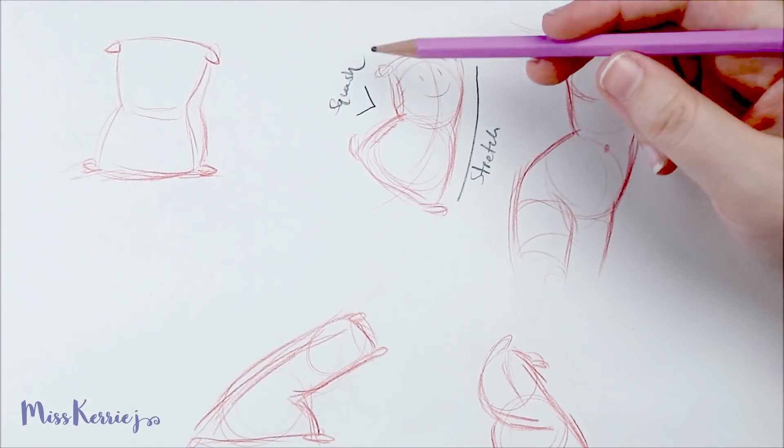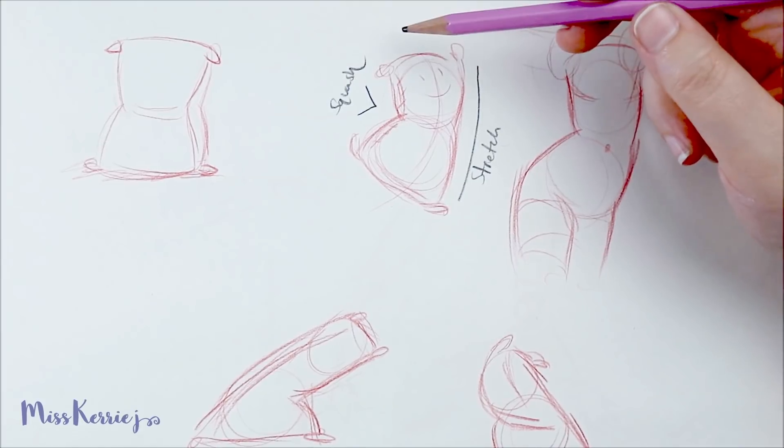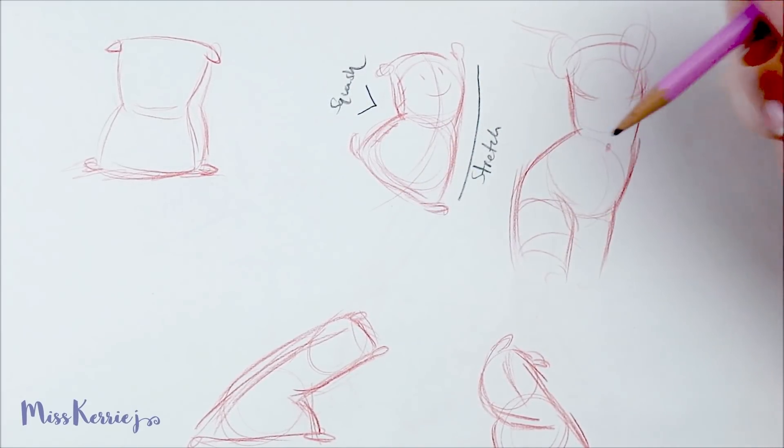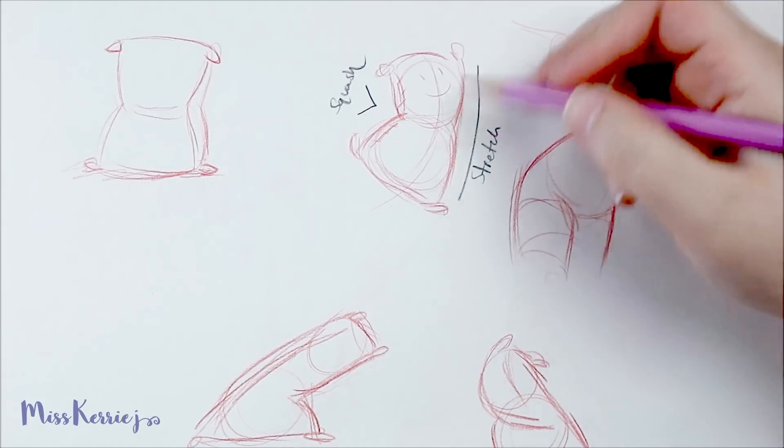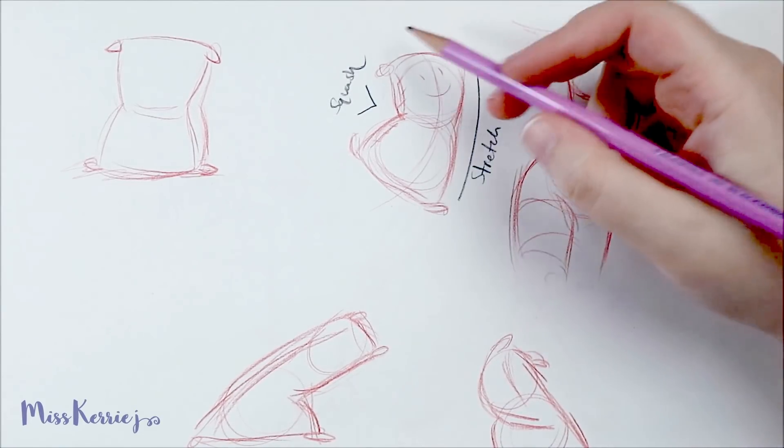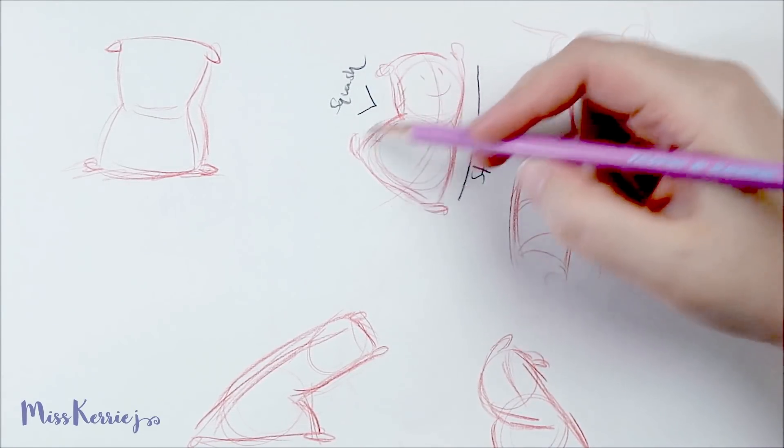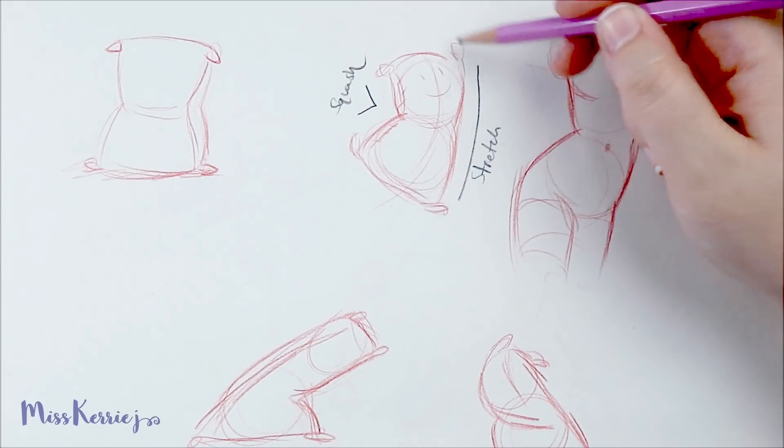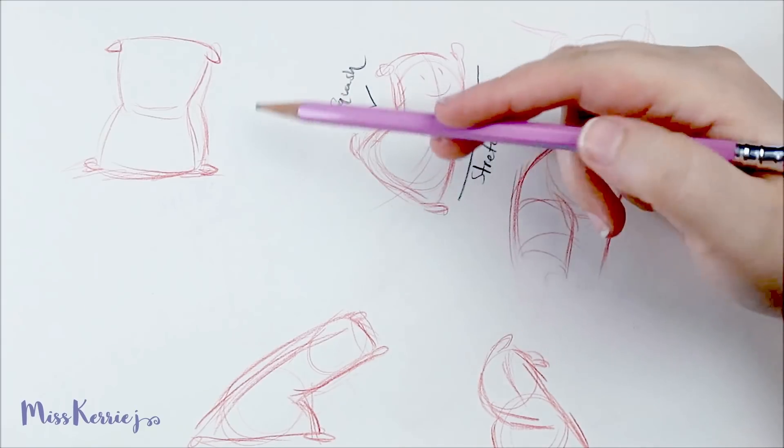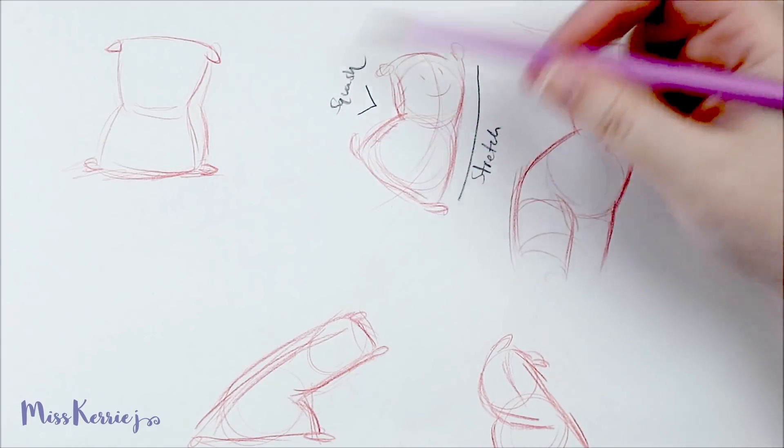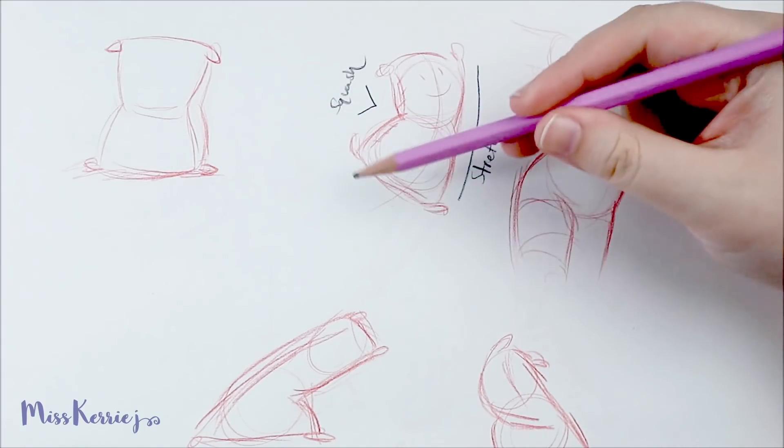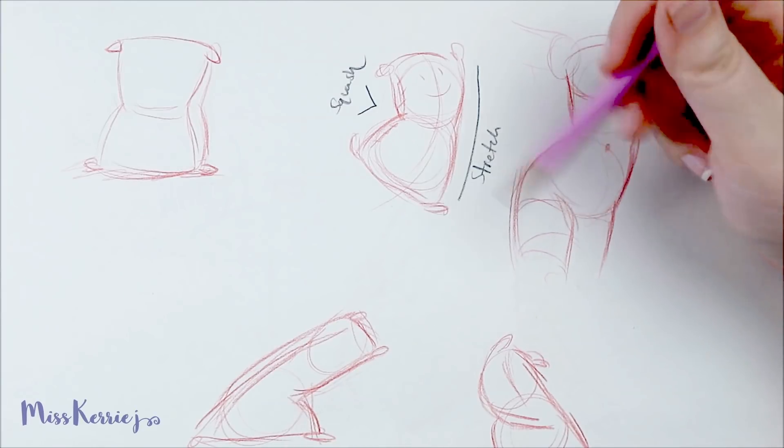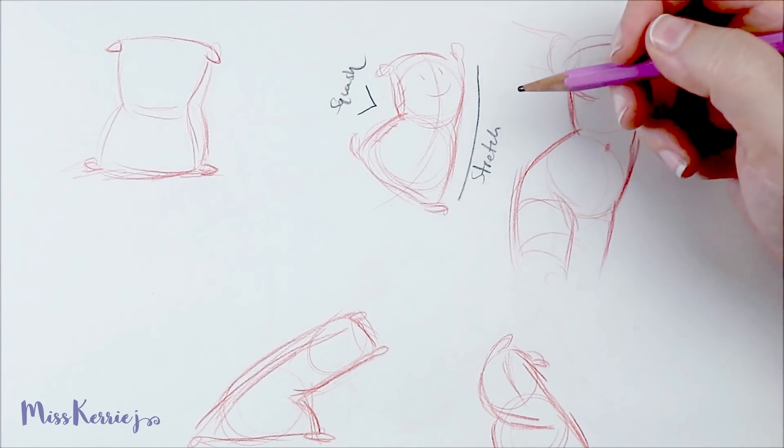So these two elements, the squash and the stretch, are your opposites, and they create more visual interest or movement in a drawing. Just having the body bent here and stretched out here creates something a lot more interesting to look at. That's the main concept I'm trying to explain - adding visual interest by using opposite elements in your drawings.